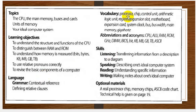Vocabulary terms: processor, chip, control unit, arithmetic logical unit, register, expansion slot, motherboard, expansion card, system clock, bus, bus width, main memory, gigahertz, abbreviation, and acronym. Abbreviations and acronyms include: CPU, ALU, RAM, ROM, gigahertz, DIMM, and BIOS.